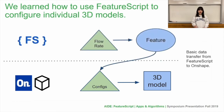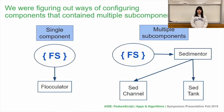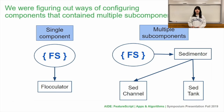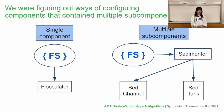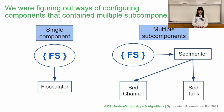If there is more than one component, FeatureScript takes an input of flow or temperature and sets variables to change the configuration in the main component of the CAD. We can also use FeatureScript to change the configuration of subcomponents of the CAD model. As you can see in the diagram, for the single component we can use FeatureScript code to set variables and change configuration in the Flocculator Part Studio. However, when there are multiple subcomponents, we can use the code to set variables and change the configuration in the Sedimentary Part Studio, which is the main subcomponent. We can also change configuration in the SetChannel Part Studio and SetTank Part Studio, which are the subcomponents.